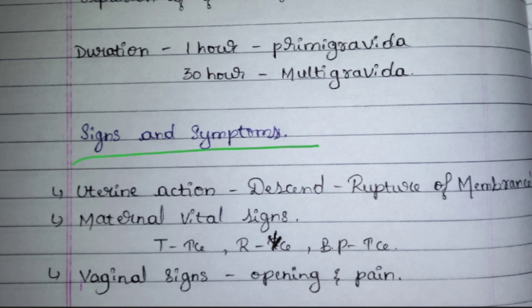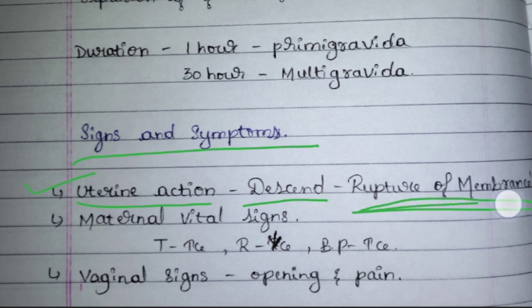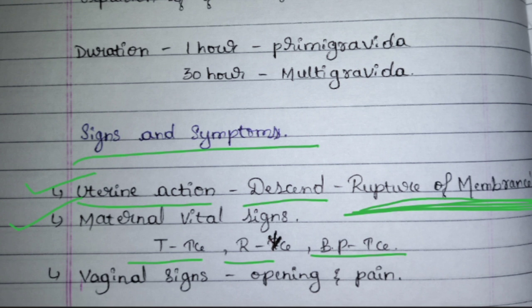Signs and symptoms of the second stage: uterine action — descent, which is regular contraction and expansion, and the movement of the baby trying to come out. Rupture of membrane may be found. Maternal vital signs change: temperature increases, respiratory rate decreases, and BP increases. Vaginal signs include widening and pain as the baby tries to come out. If the baby cannot come out, episiotomy may be performed.